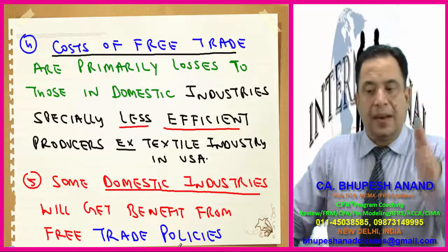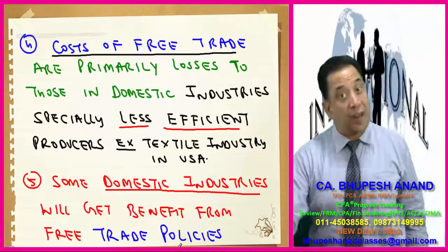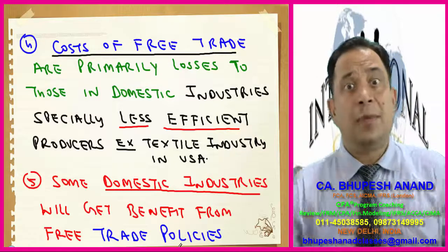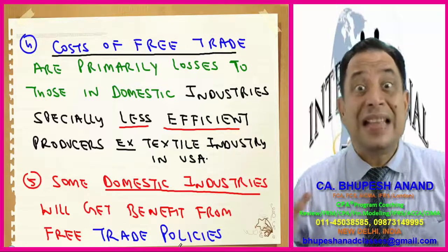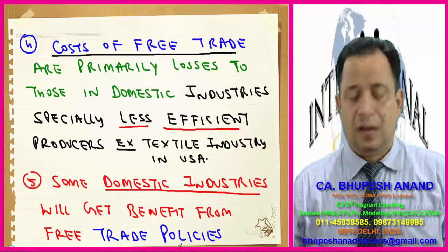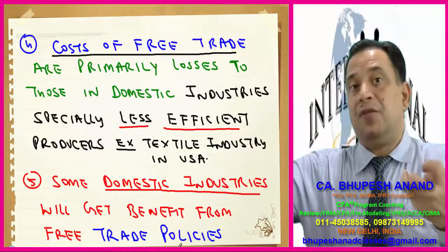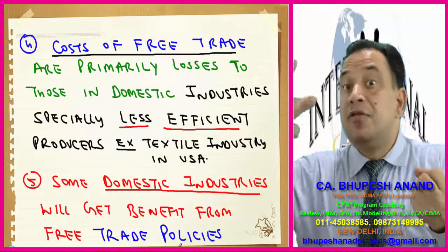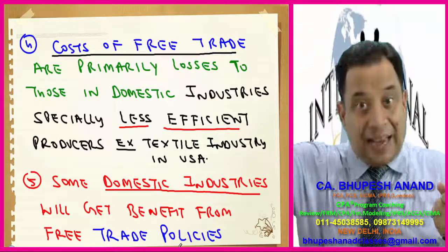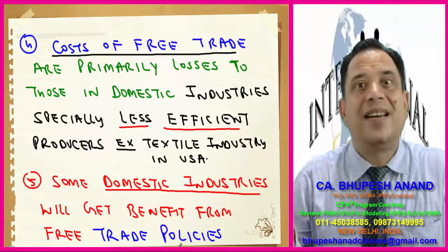The costs are primarily the loss to domestic industries, especially less efficient producers. Once we are purchasing from China, so many domestic industries have been closed down and unemployment has increased. But they were inefficient — not using the best technology. The cost can be that some domestic industries will get benefit from pre-trade policies because if import is allowed, they will be purchasing raw material at a lower cost from foreign countries.